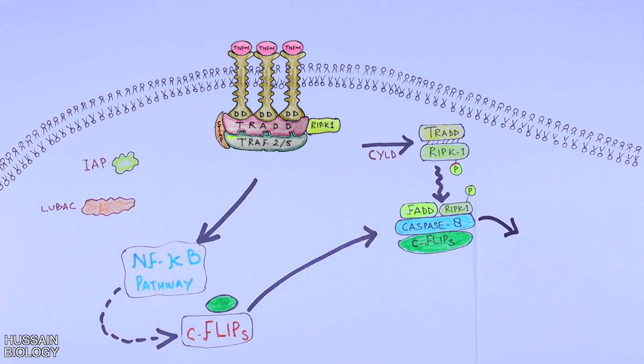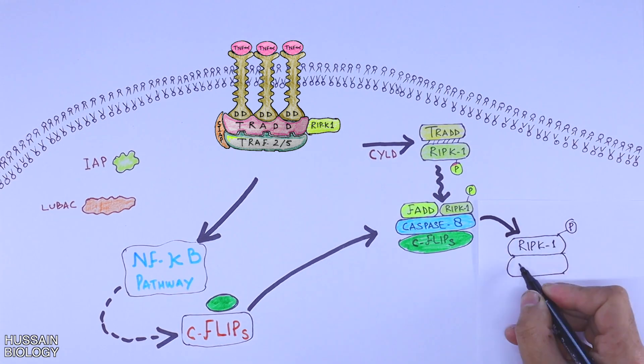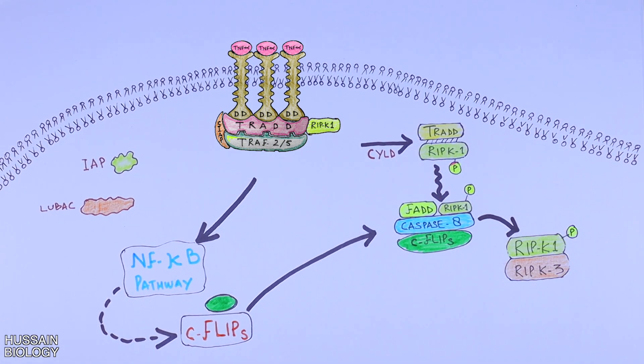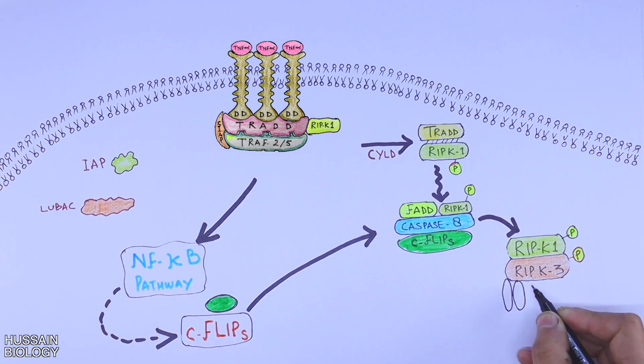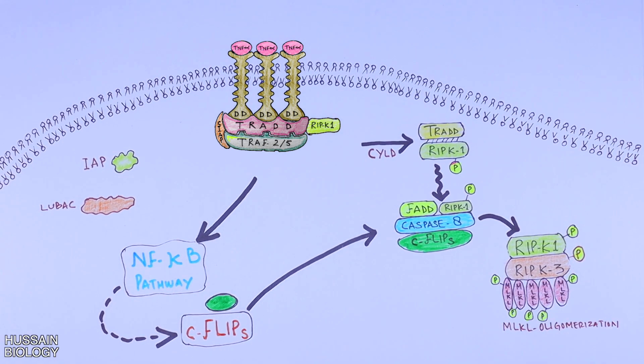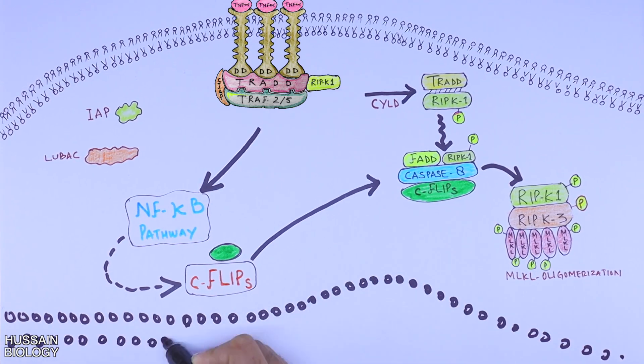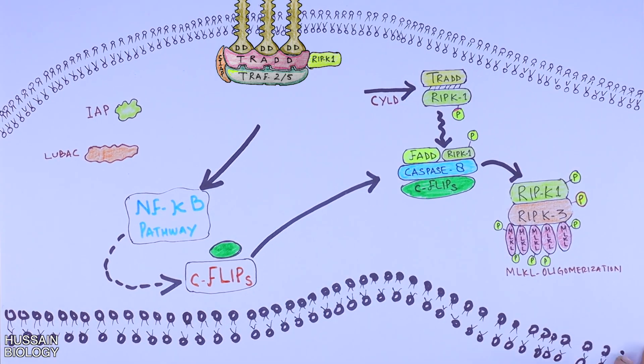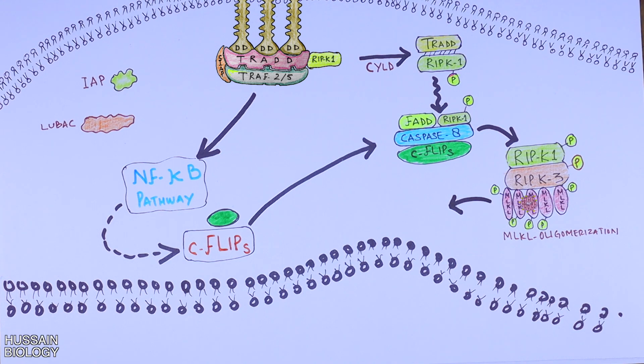We see here the phosphorylated RIPK1 recruits RIPK3, and this RIPK3 is autotransphosphorylated, which then also inactivates caspase 8. Proceeding further, the activated RIPK1 and RIPK3 complex phosphorylates and activates MLKL monomers and induces oligomerization of MLKL monomers. The MLKL oligomer is then translocated into the plasma membrane, where it forms octamer pore.